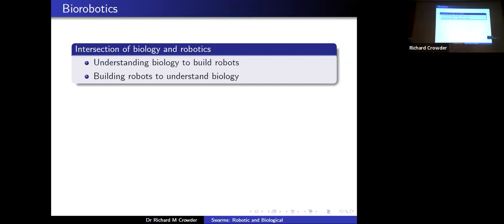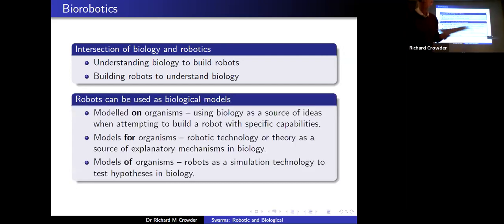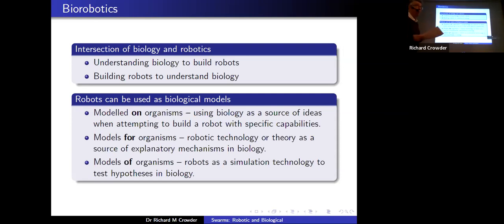Can we actually drill deeper into that? Can we build robots to understand biology — use robotics to actually model biological systems? We can have robots that are modelled on organisms, models for organisms, and models of organisms. We can use biology as a source of ideas, use robotics as a source of ideas for biologists, and use robotics as a simulator to actually test hypotheses from biologists.